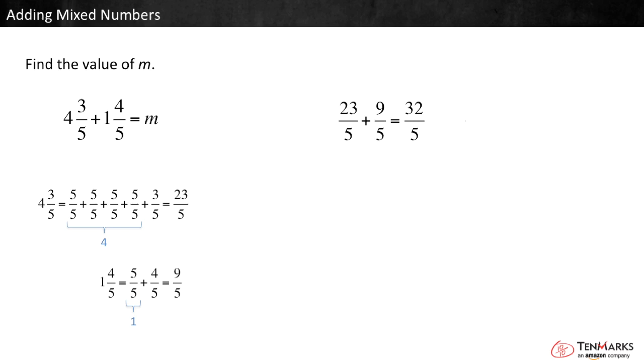You can stop there, or you can rewrite it as a mixed number. To see how many groups of 5 fifths you can make from 32 fifths, divide 32 by 5. 5 goes into 32 6 whole times with 2 left over. So, the mixed number is 6 and 2 fifths. That is the value of m.